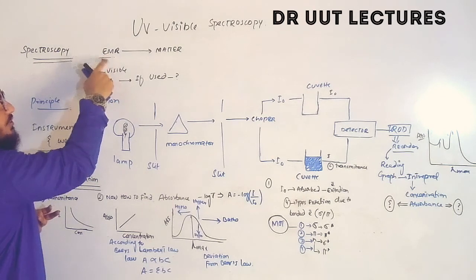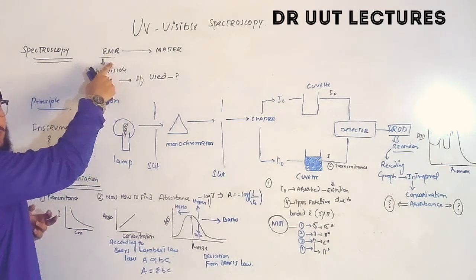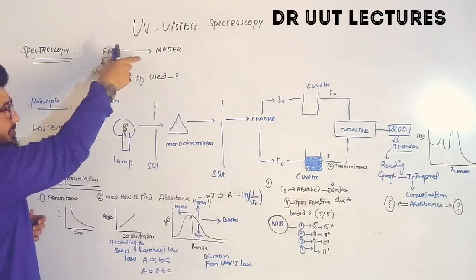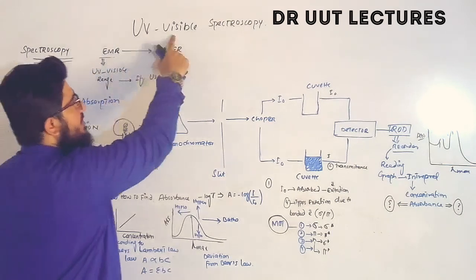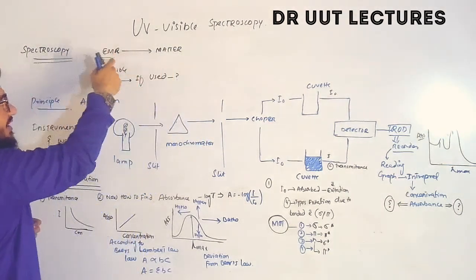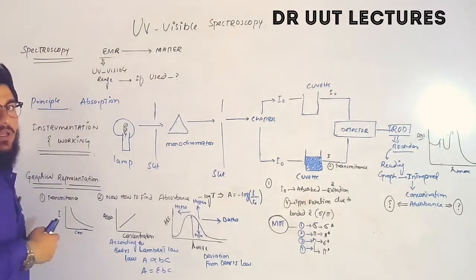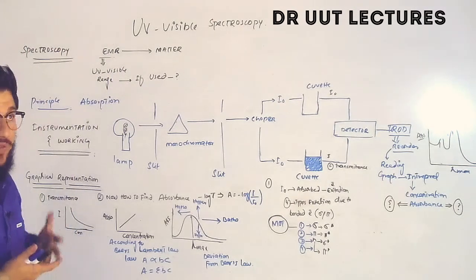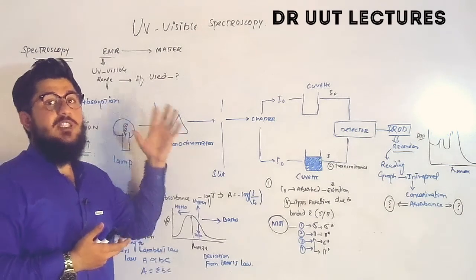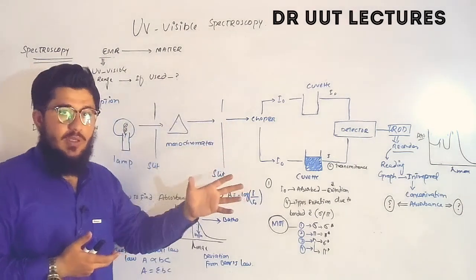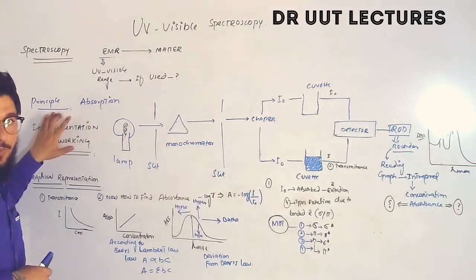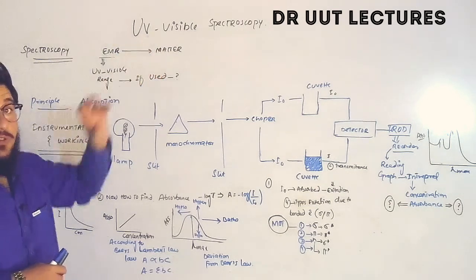Now, what is UV visible spectroscopy? The answer is very simple. If we use a particular range of EMR — like the UV visible range — then this spectroscopy will be named UV visible spectroscopy, because we are using a specific range of EMR, the UV visible range.